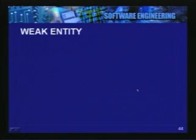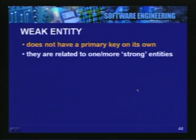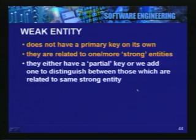Let us now go to the concept of weak entities. There are times when you encounter entities which do not appear to have a primary key on their own. Such entities are called weak entities, and they are always related to some other entity — called a strong entity — which has its own primary key. These weak entities seem to exist only in the context of some other strong entity; they may be distinguished within that context but not on their own.